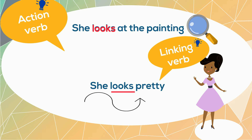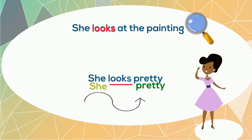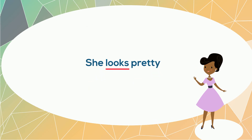It connects the subject, "she," to the adjective, "pretty." In the second sentence, the verb "looks" tells us more information about the subject, "she" — it describes how she looks. And that's what linking verbs do: they connect the subject to more information about the subject.